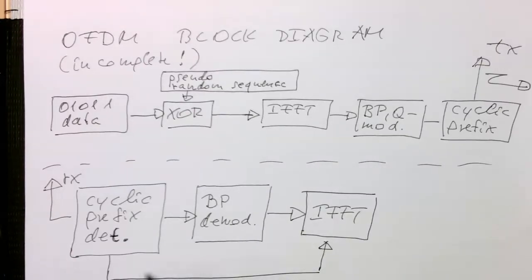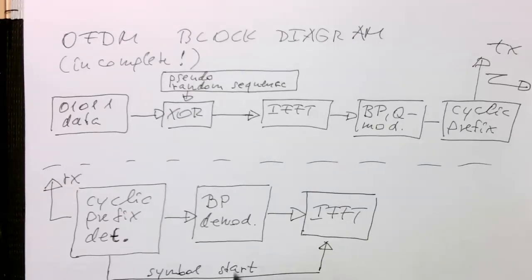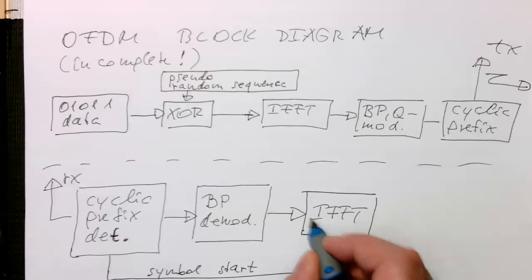That's transmitted here via the detector. So that's the symbol start. Essentially, it gives us a sample number where the symbol starts and tells the IFFT to do the inverse from that sample.